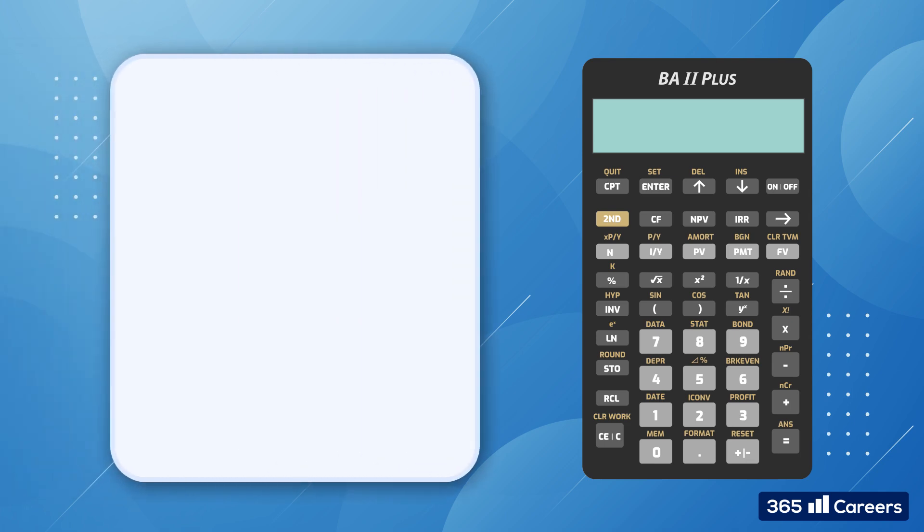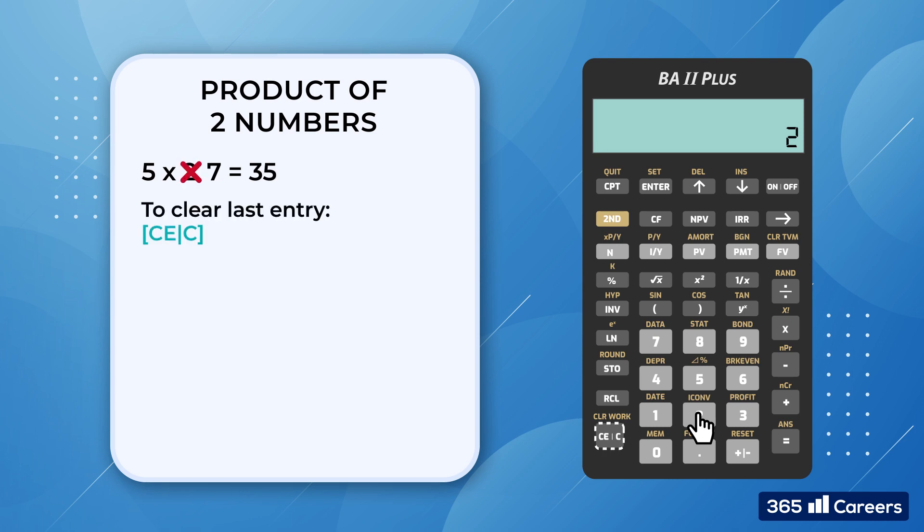Let's start with the basics, calculating the product of two numbers. We will multiply 5 by 2. Hit equals, which gives us 10. Now imagine that while carrying out this operation, we decided we wanted to multiply 5 by 7 instead of 2. We could do that by pressing CE/C once, then 7, followed by the equal sign. The result is 35.